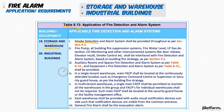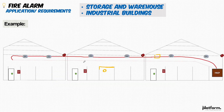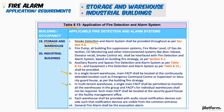For a single tenant warehouse, the main fire alarm control panel shall be located at a continuously attended location — such as an emergency command center, supervisor room, or security guard house — as per the building fire strategy. If you have only one storage or one warehouse and you consider it as a single tenant, then you need to install the fire alarm system and it should be in a continuously attended location.